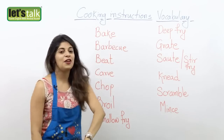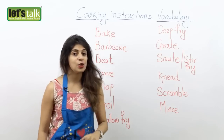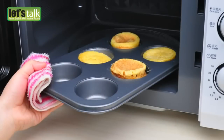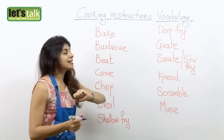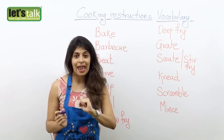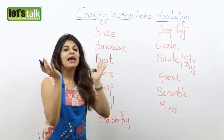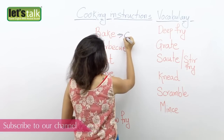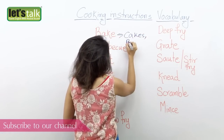The first one we have here is bake. Bake means when we put our food in an oven and cook it on heat — such as cakes, casserole, or even bread. So that is when we say, I'm gonna bake a cake. It means I'm gonna put the food in the oven and cook it on heat. So you bake cakes or even bread.